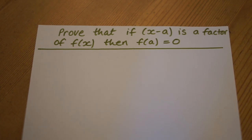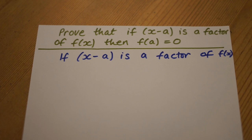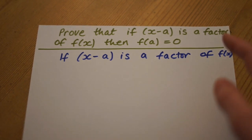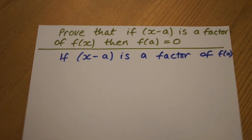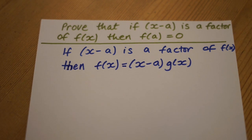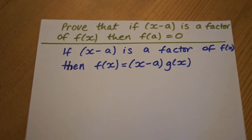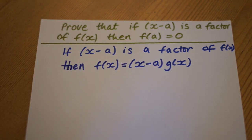To prove this, we say if x minus a is a factor of a function f of x, which means that x minus a will divide into f of x without a remainder, then f of x equals x minus a multiplied by g of x.